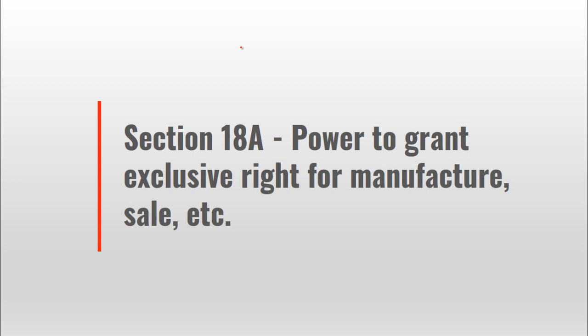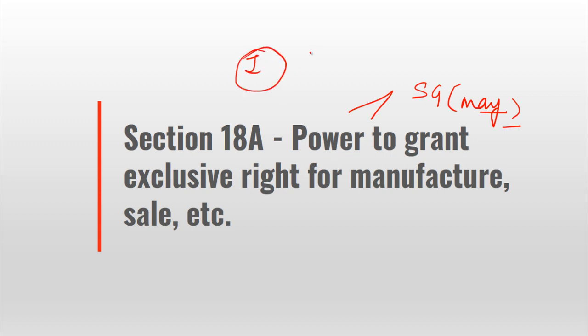Next, Section 18A has been substituted, which deals with the power to grant exclusive right for manufacture, sale, etc. This power to grant exclusive right belongs to the state government. The provision uses 'may,' so it is a discretionary power. The state government may grant exclusive right in respect of any intoxicant.